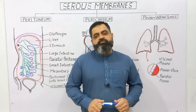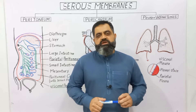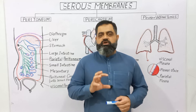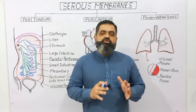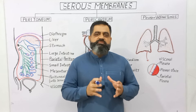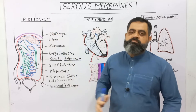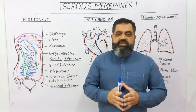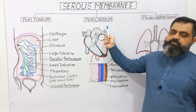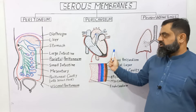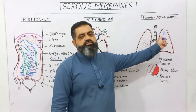In this video lecture we are going to discuss serous membranes. Serous membranes are specialized membranes which surround our vital organs like the digestive system, heart, and lungs, which have the ability to contract and relax. There are three major types: number one, peritoneum, which is present in the abdominal cavity; number two, pericardium, which surrounds the heart; and number three, pleura, which surrounds the lungs.